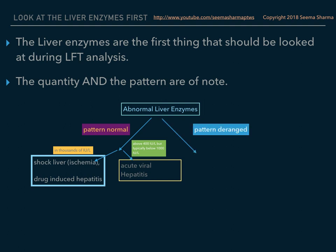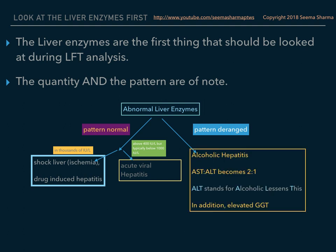If the pattern is deranged — mainly looking at the pattern being deranged, not necessarily how high the numbers are — then you're dealing with alcoholic hepatitis. In alcoholic hepatitis, AST rises to become twice the value of the ALT. A helpful mnemonic: ALT stands for 'Alcoholic Lessons This.'